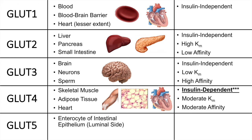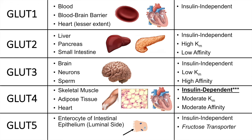The last GLUT to discuss is GLUT5. These glucose transporters are found in enterocytes of the intestinal epithelium, particularly on the luminal side facing the lumen of the small intestine. These are also insulin independent, and they are important for fructose transport — fructose is always taken up via GLUT5.